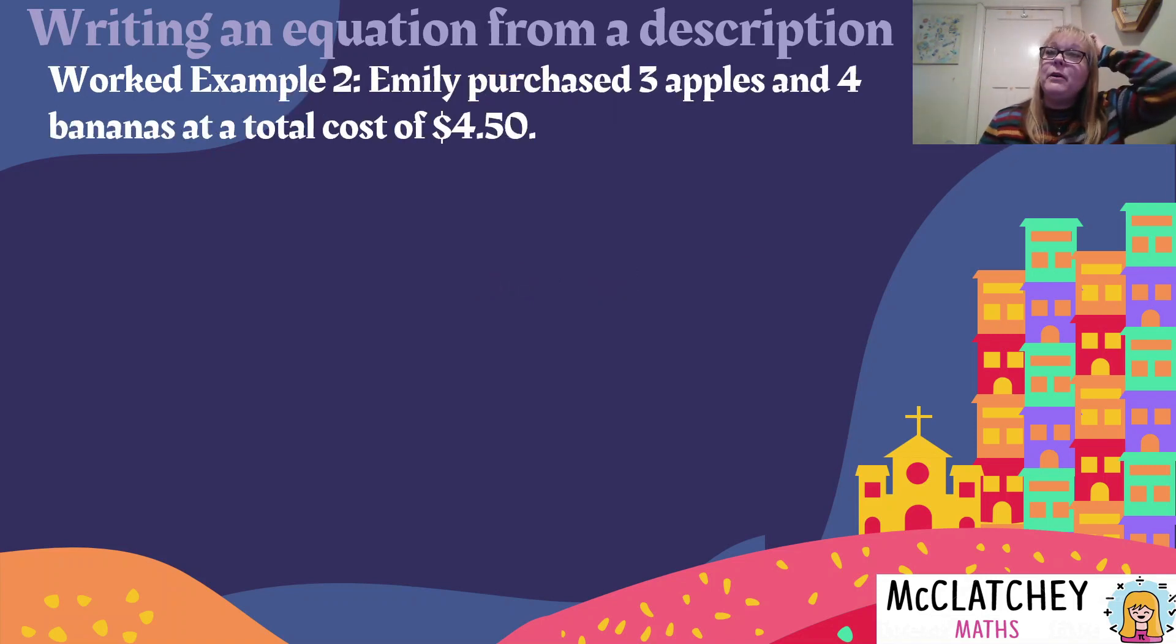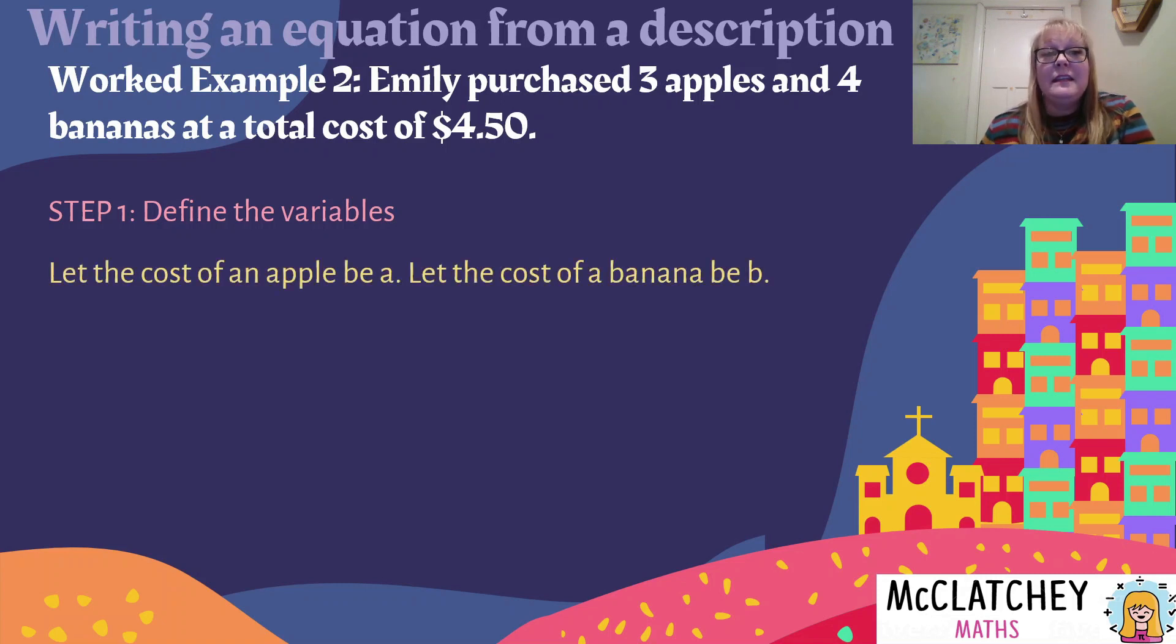Here's our second example. Emily purchased three apples and four bananas at a total cost of $4.50, and we need to come up with an equation from that situation. Now the very first thing you need to do is define what are called the variables, the letters that we're going to use to make this situation come about. I'm going to be choosing the letter A for the cost of an apple and the letter B for a cost of banana. It's really important to be precise. A lot of students will say let apples be A and bananas be B. That wouldn't possibly refer to the cost, but it could also refer to the weight of the apples and bananas. So you need to be precise with your language. And this is what we call a let statement. Let the cost be A. Let the cost be B.